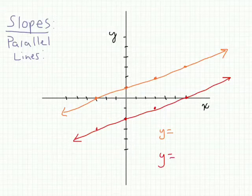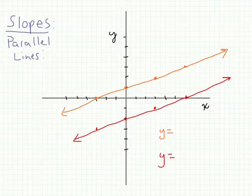Welcome to Geometry 7-3. We're looking at slopes, beginning with parallel lines, and also looking at perpendicular lines and their attributes on a coordinate plane, as well as in their equation form.